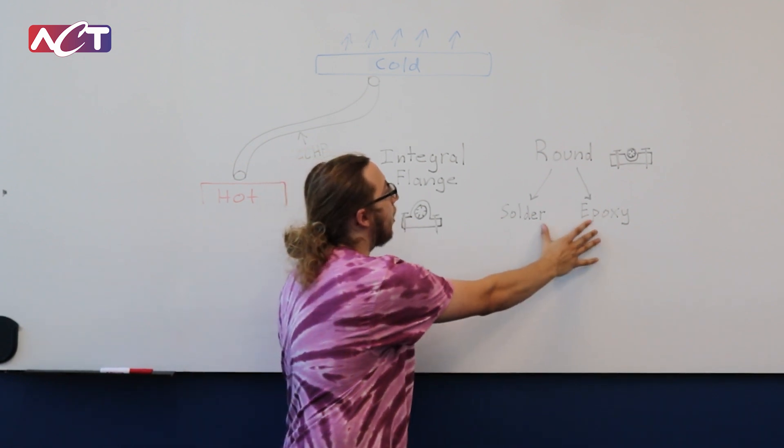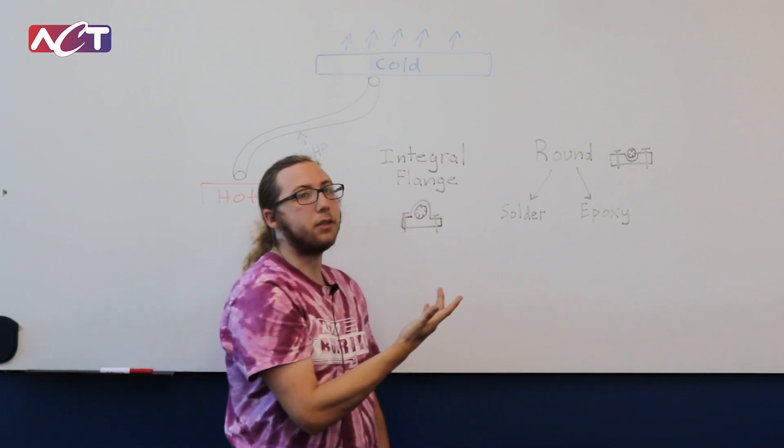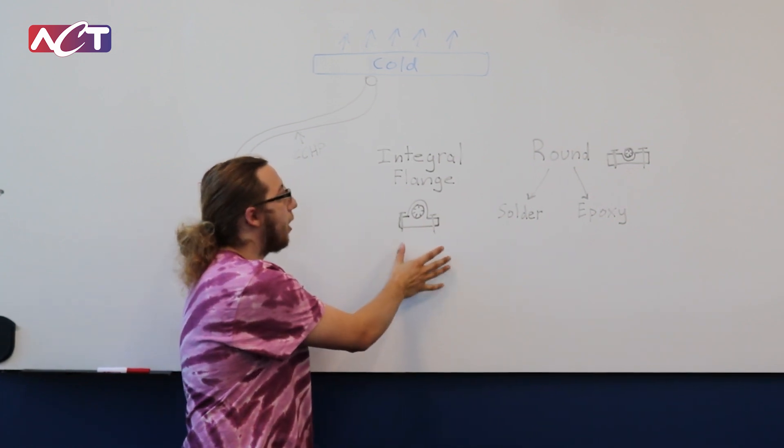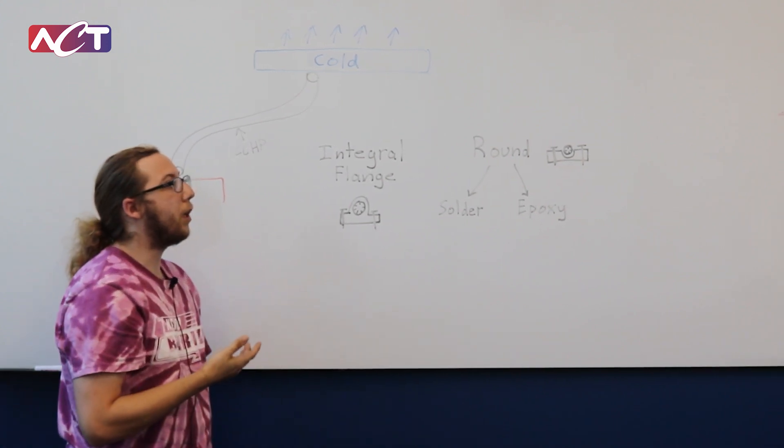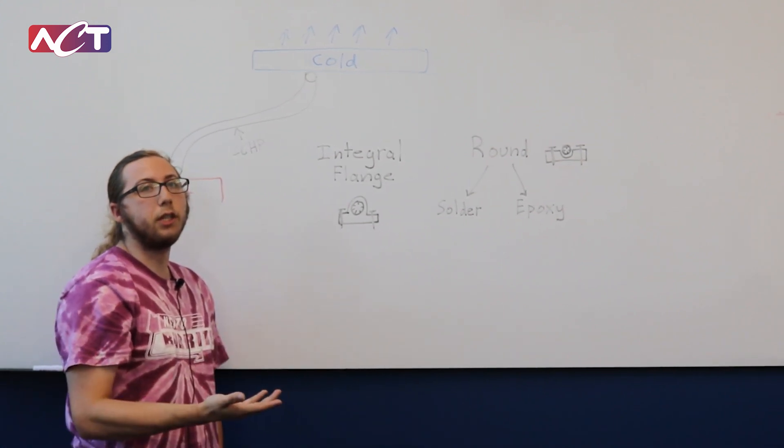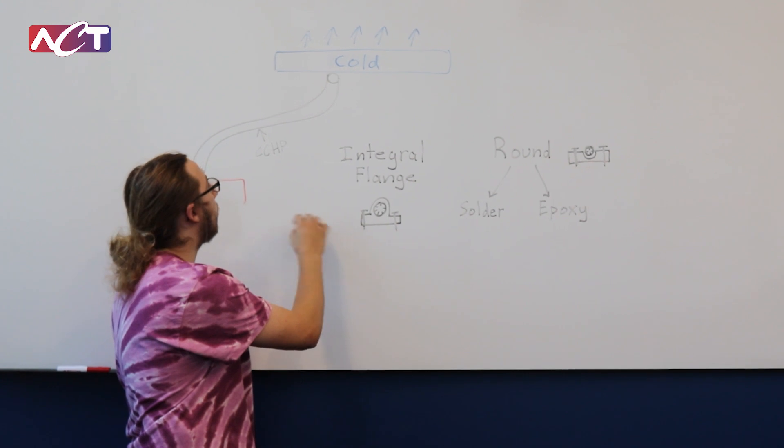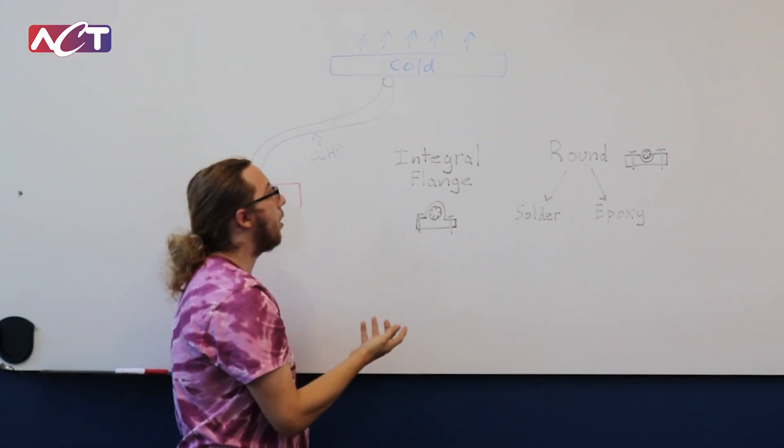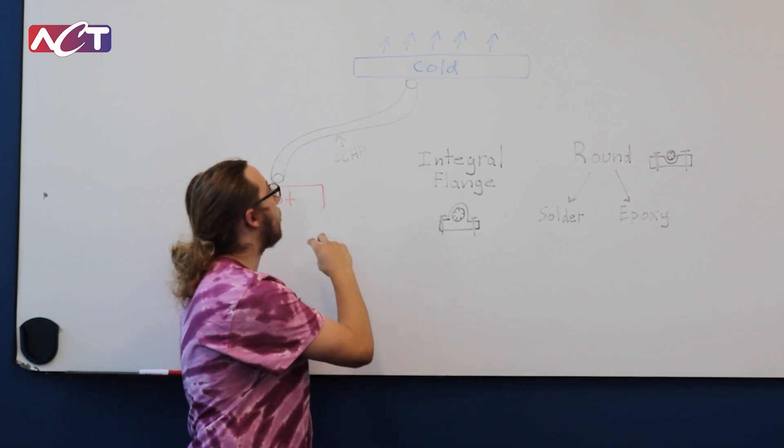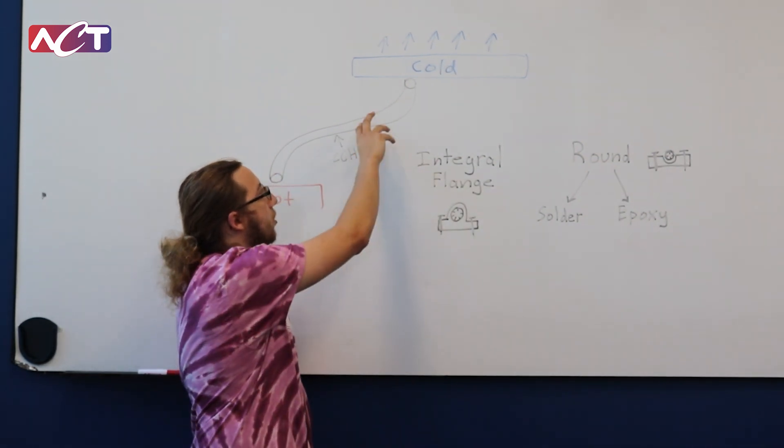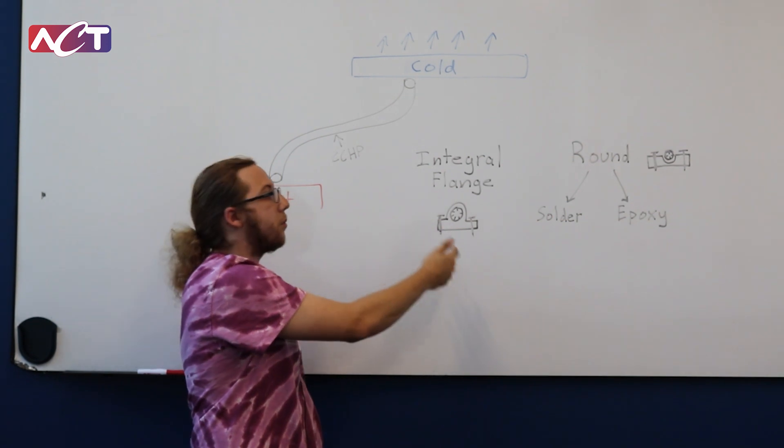But each of these have their own advantages and disadvantages. So the integral flange, as mentioned, is probably the easiest to manufacture. But it requires additional machining to take away the flange portion in areas where you're trying to bend it. So that's a little bit extra manufacturing steps. And it sort of restricts the orientation of the flanges as you're moving through space.